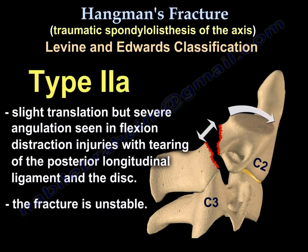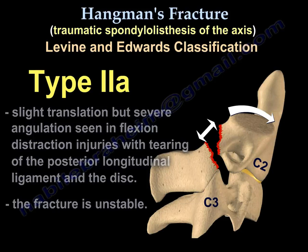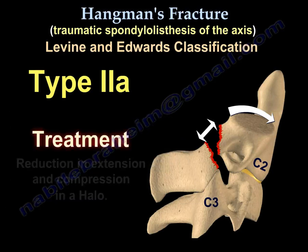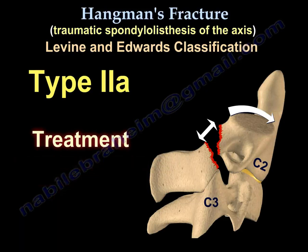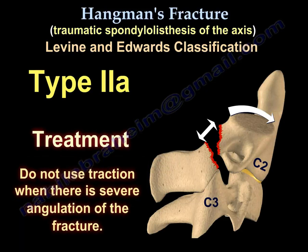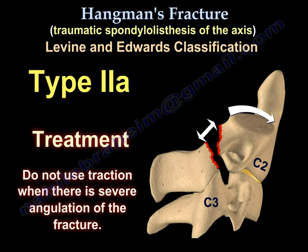Type 2a involves slight translation but severe angulation. This angulation is seen in flexion-distraction injuries with tearing of the posterior longitudinal ligament and the disc. The fracture is unstable. Treatment is reduction in extension and compression in a halo. Do not use traction when there is severe angulation of the fracture.